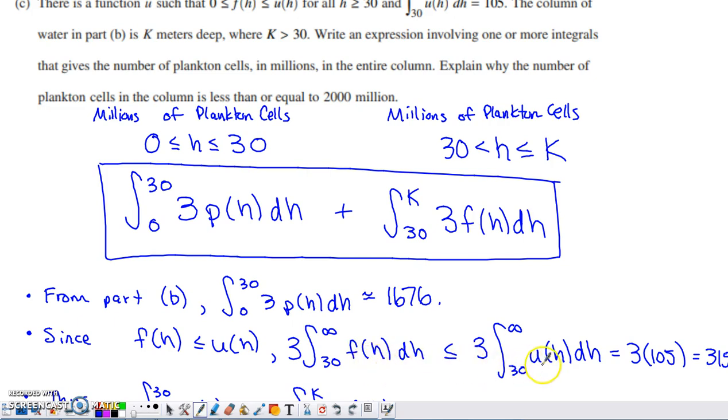And I write a similar integral on the other side of this inequality symbol. f of h is less than or equal to u of h. So I know that the definite integral of f of h from 30 onward to infinity is going to be less than or equal to the definite integral of u of h from 30 onward to infinity. And I've just factored the 3 out in front of those integrals or multiplied both sides of that inequality by 3, however you want to think of it.